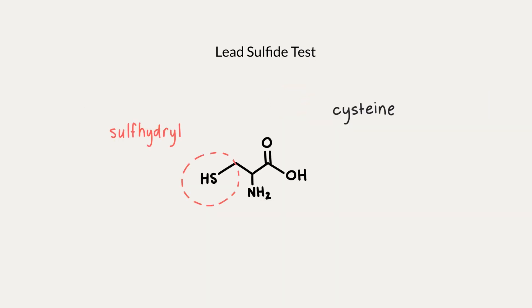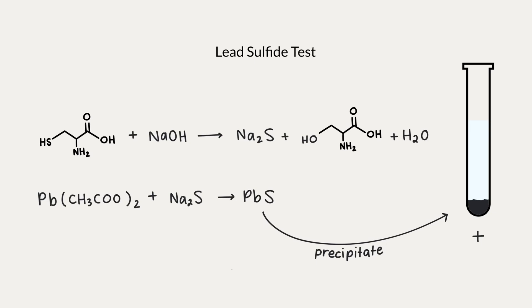The lead sulfide test detects sulfur-containing amino acids like cysteine. The principle is that a sulfhydryl group will react with sodium hydroxide to form inorganic sodium sulfide. Lead acetate is then added and forms lead sulfide, which is a black precipitate. If we observe the formation of a black precipitate in the solution, this indicates a positive test and that cysteine was present.